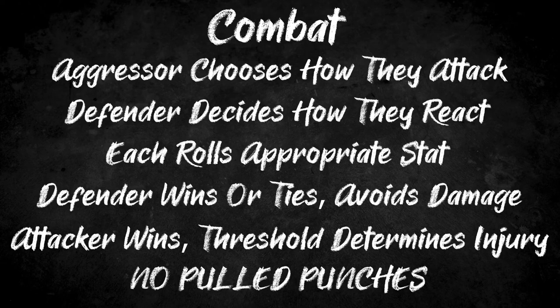If the attacker wins, the attack manages to get through, and the threshold by which they succeeded determines just how bad the damage is. There are no pulled punches in this system — if you are rolling an attack against another creature, there is always the chance that you might accidentally kill them. If the attacker's roll beats the defender's roll by 10 or more, the defender is, as a result of this attack, dead or nearly dead. This is hugely consequential, as any combat action with the threat of exploding dice could easily turn into a lethal scenario.